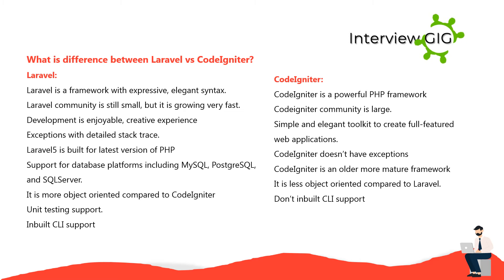What is the difference between Laravel and CodeIgniter? Laravel: Laravel is a framework with expressive, elegant syntax. Its community is still small but growing very fast. Development is an enjoyable, creative experience. It provides exceptions with detailed stack traces. Laravel 5 is built for the latest version of PHP. It supports database platforms including MySQL, PostgreSQL, and SQL Server. It is more object-oriented compared to CodeIgniter, with unit testing support and inbuilt CLI support. CodeIgniter: CodeIgniter is a powerful PHP framework with a large community. It provides a simple and elegant toolkit to create full-featured web applications. CodeIgniter doesn't have exceptions. It is an older, more mature framework, less object-oriented compared to Laravel, and does not have inbuilt CLI support.